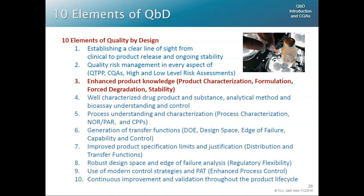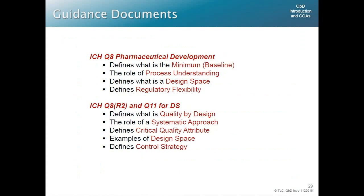Steps one, two, and three are done. Next is product knowledge. We've got clear line of sight, we've got risk assessments — now we need product knowledge. The real question is: what really is knowledge? How do you know you know something? We have to tell the FDA, EMA, KFDA, CFDA, and all the regulatory agencies that we have a good understanding of the drug. How do we tell somebody that we know something?